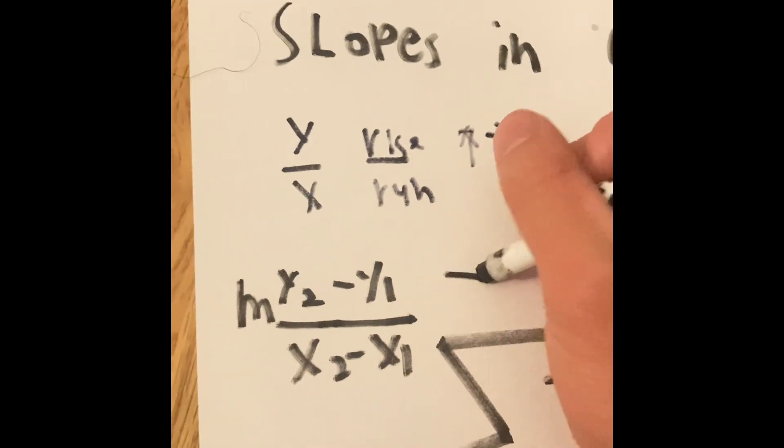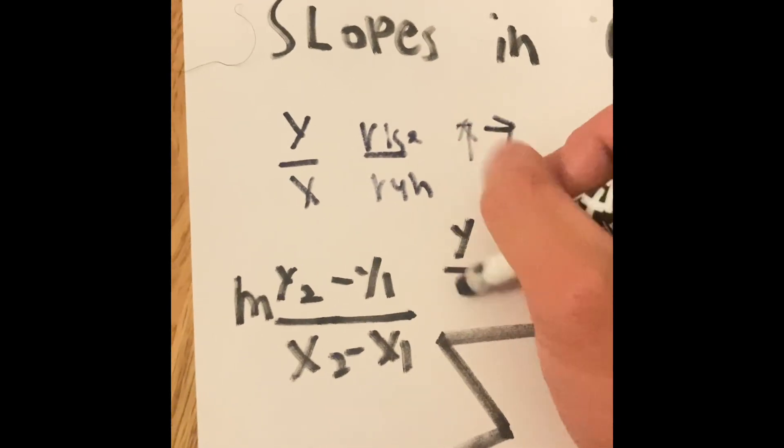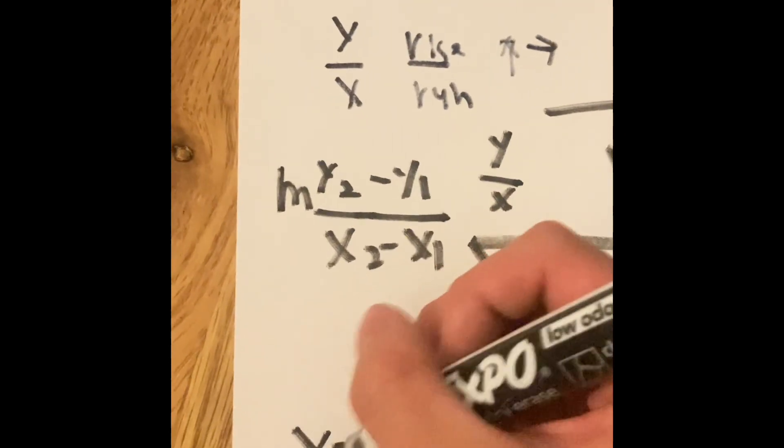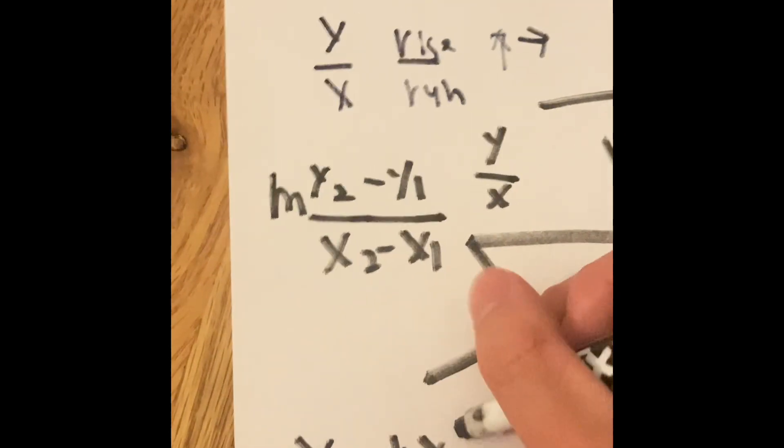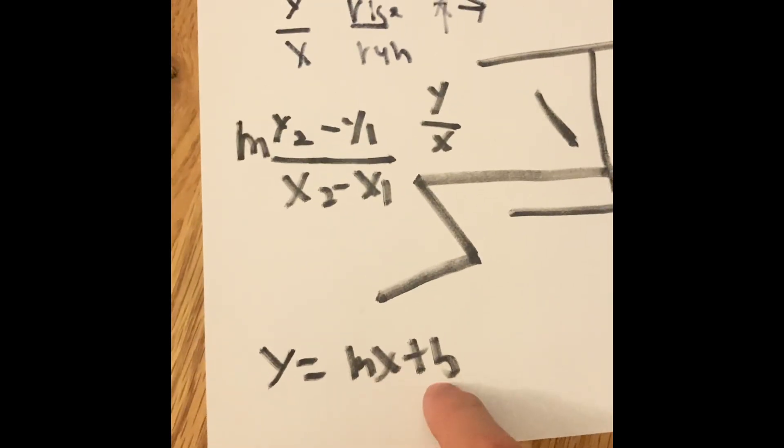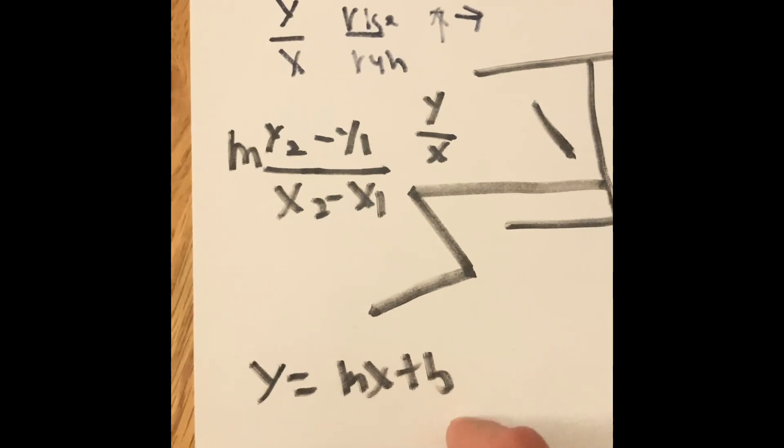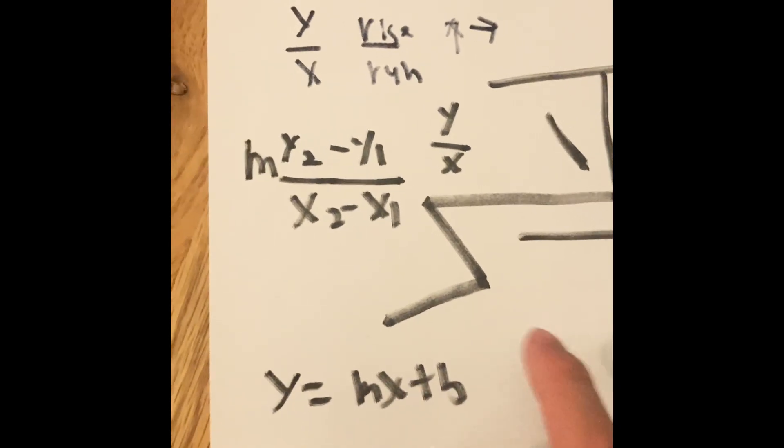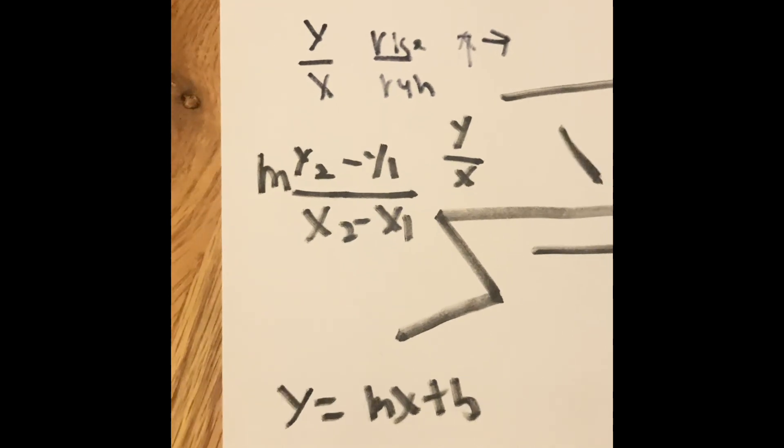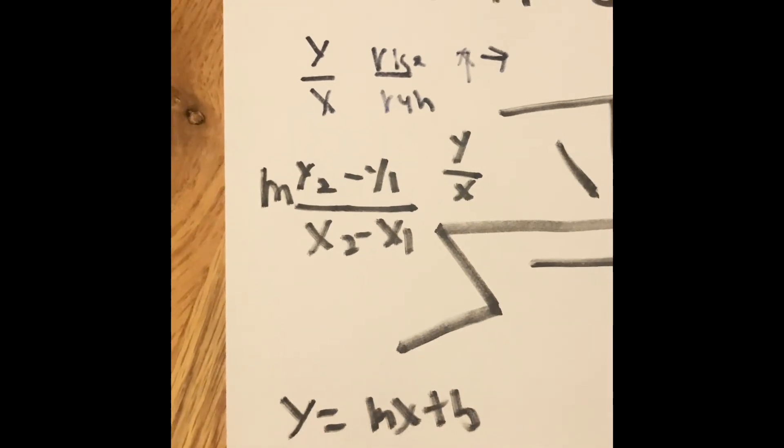When we get a fraction, we get a slope. And we've also been familiar with y equals mx plus b. That is our slope intercept formula, where m is denoted as the slope.